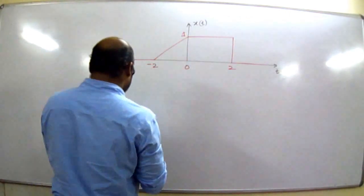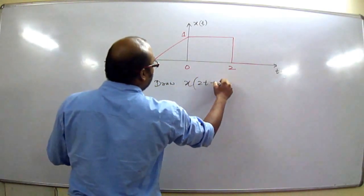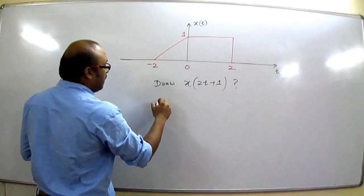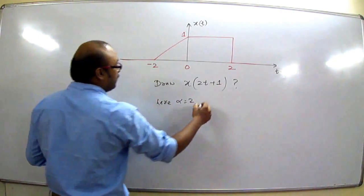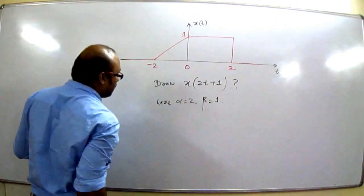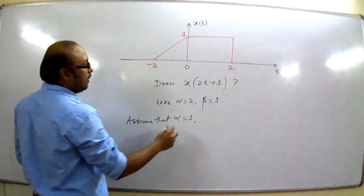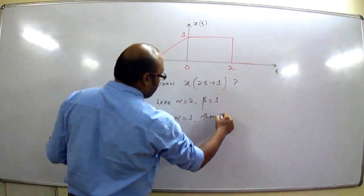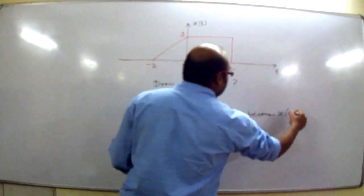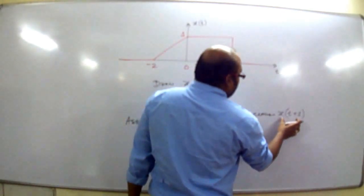Here we have to modify x(t) — let us draw x(2t + 1). x(t) is given; we have to draw x(2t + 1). Here α is 2, the original value of α is 2, and β is 1. To draw x(2t + 1) from x(t), first of all we assume that α is 1. If α is 1, then the signal becomes x(t + 1).